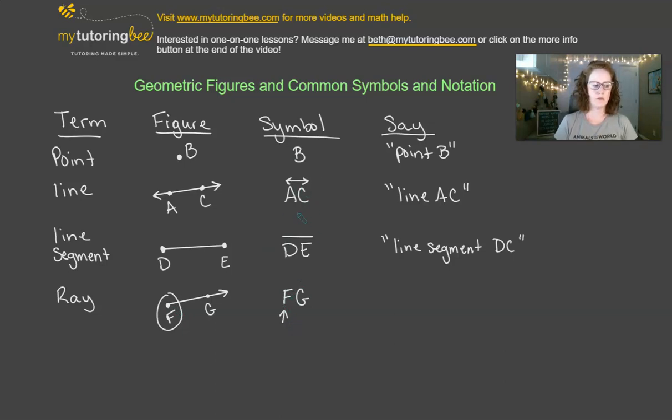G is just another point somewhere along the ray. And so just like we have the line and line segment, we need something on top here, and so that's just going to have a line with one arrowhead, and so we would call this ray FG.